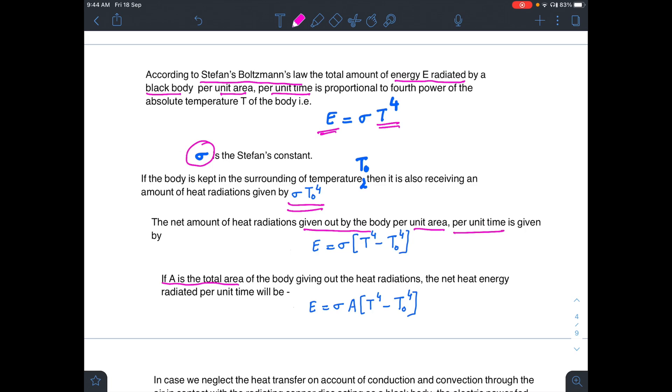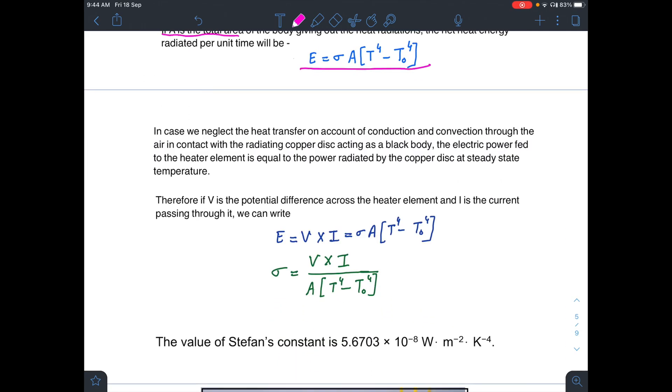If A is total area of the body giving out heat radiations, the heat energy will be multiplied by the area and it will be sigma A times T to the power 4 minus T0 to the power 4.